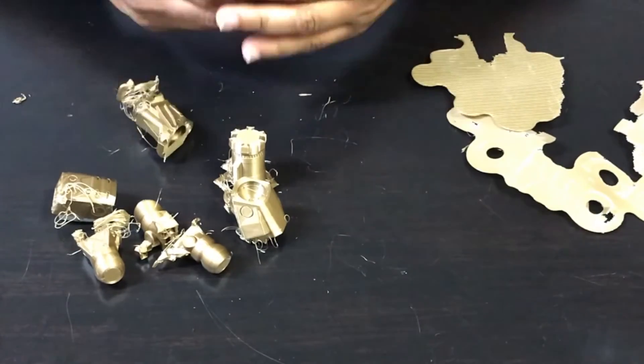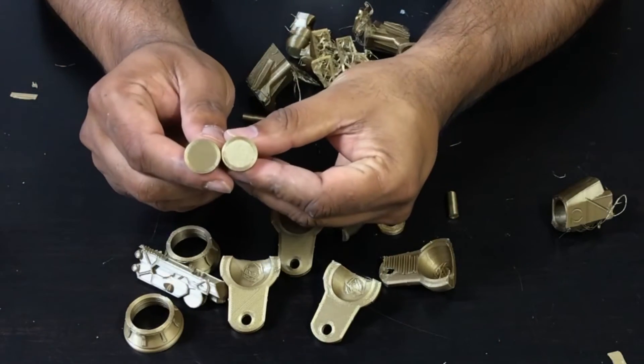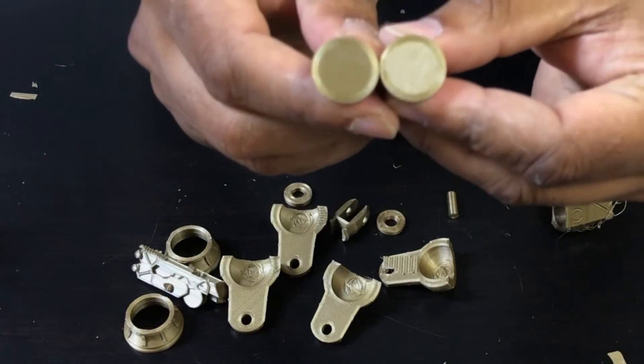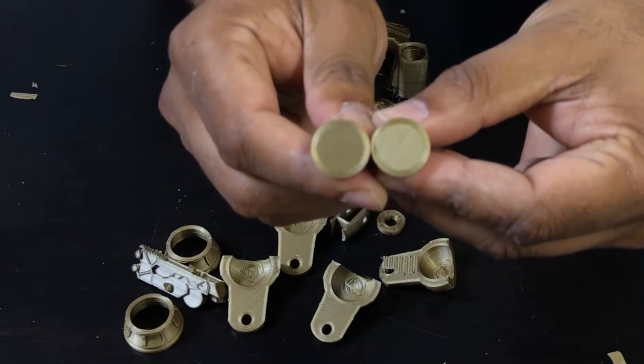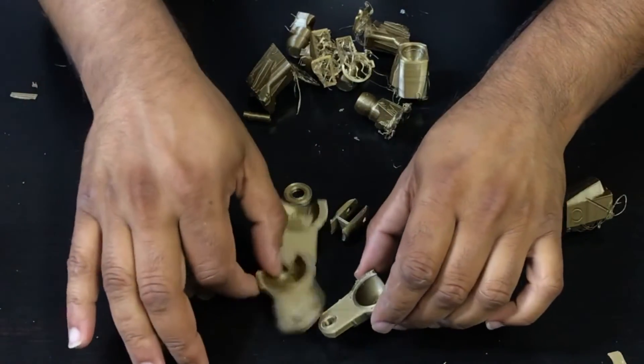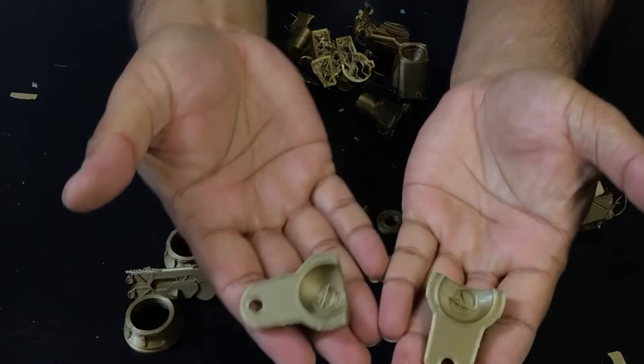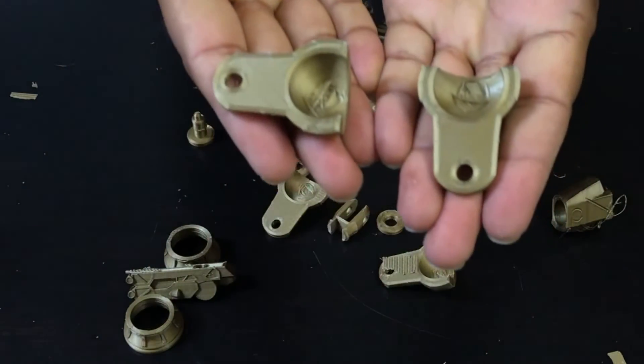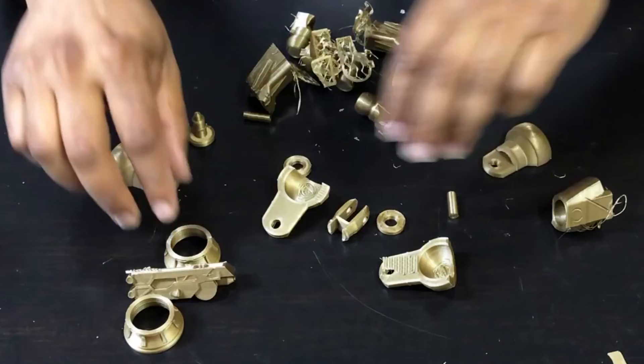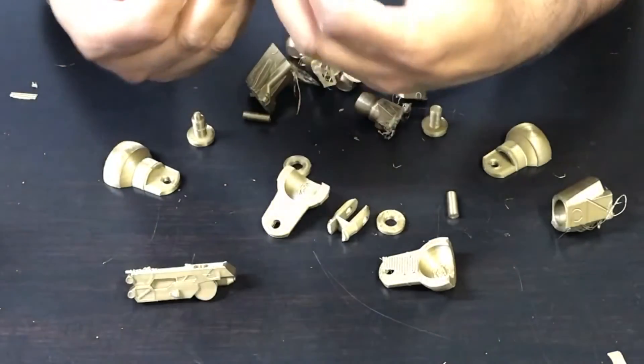So these settings work very well as far as popping models off the raft. As you can see, had no problem. But what about the quality of the print? So if you notice right here, this part was attached to the raft. It came out very smooth. If you look at these two pieces here, I mean it's like they were printed on glass. I mean I don't have any problem with it. So this was a success.